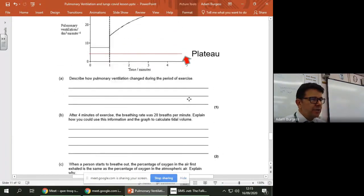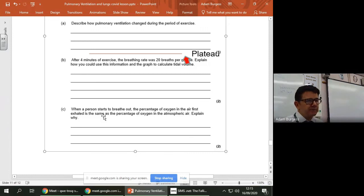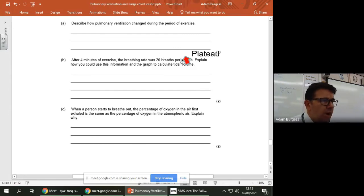I'll show you one last question. Okay, so you can have a go at that one. So it says, when a person starts to breathe out, the percentage of oxygen in the air first exhaled is the same as the percentage of oxygen in the atmospheric air. Can you explain why?